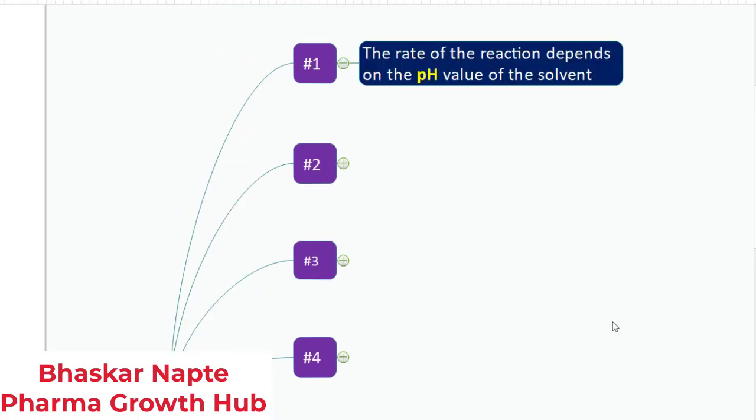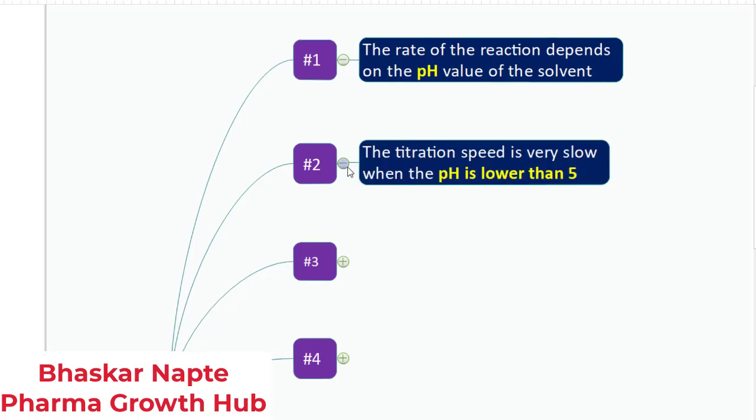You need to understand that the rate of the reaction depends on the pH value of the solvent. The KF titration gets influenced because of the pH change. So what is the preferred pH for the titration? In the case of the solution, it is between 5 to 7.5 or roughly 5 to 8, so near to neutral.